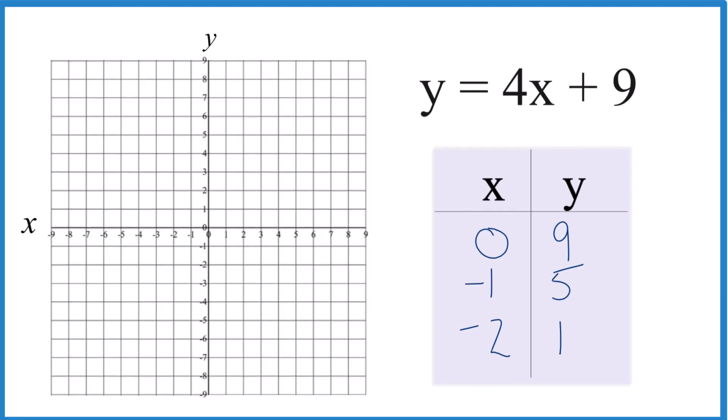Let's graph them. So we have x is 0, y is 9. So here's x is 0, way up here, y is 9. x is negative 1, y is 5. And then x is negative 2, y is 1. And you can see they all line up.